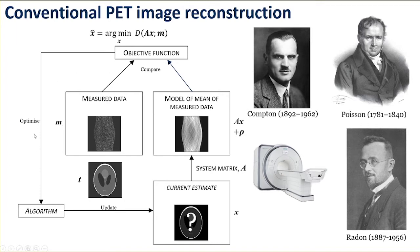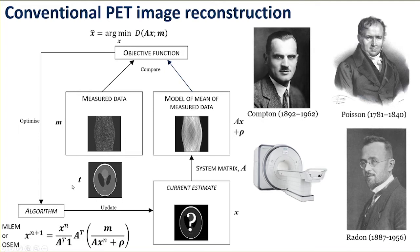We use an algorithm to optimise this objective function — find the X that minimises that distance. Because we're using a Poisson distribution and not a Gaussian distribution (which would be a least squares problem), with Poisson we don't have a closed-form solution, so we have to use an iterative method in PET. I'll be going into this algorithm later — the maximum likelihood expectation maximisation or ordered subsets expectation maximisation — which is a basic overview of image reconstruction in PET.